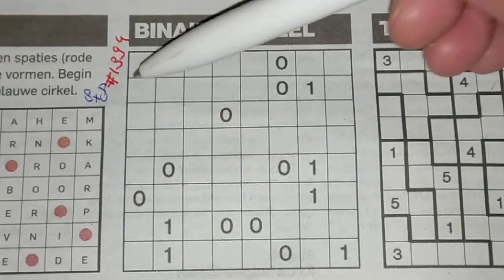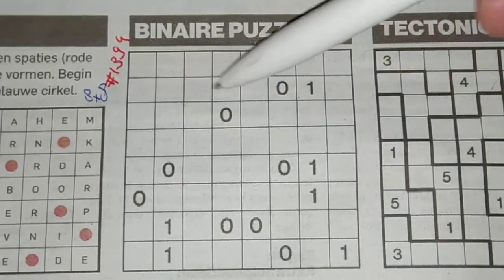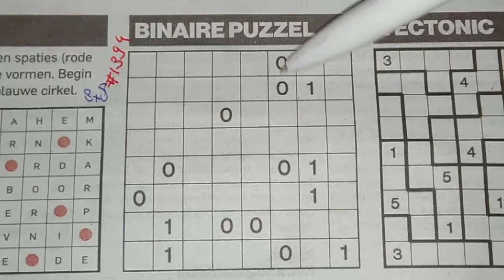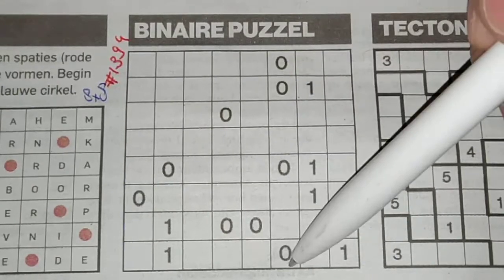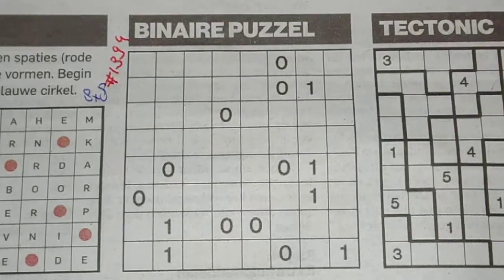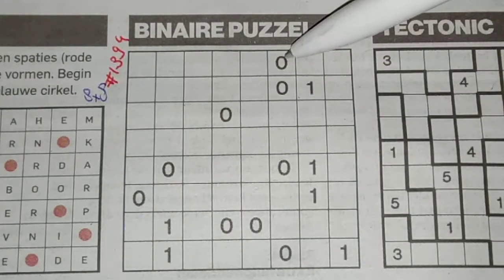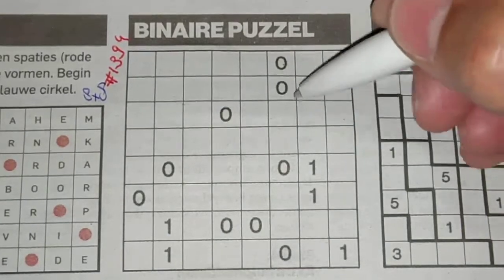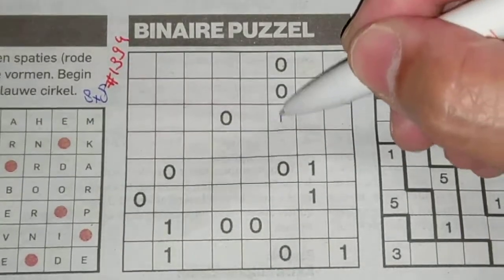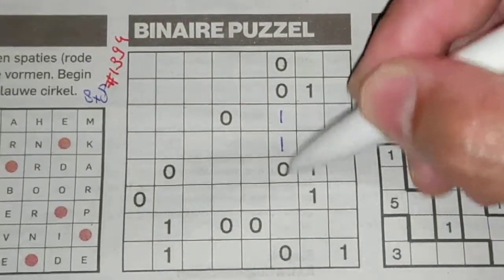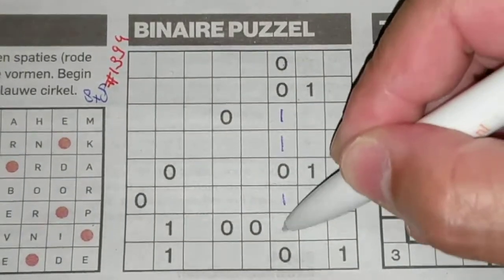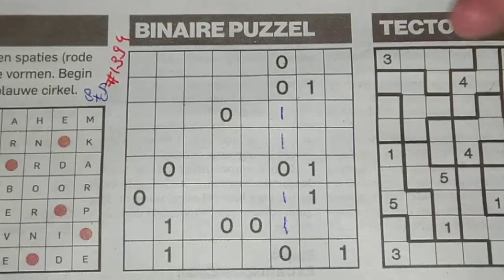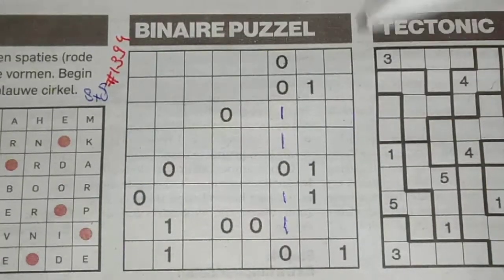That means in a row or in a column, there are always four O's and four ones. So let's get started.